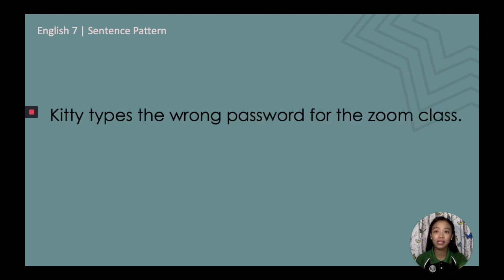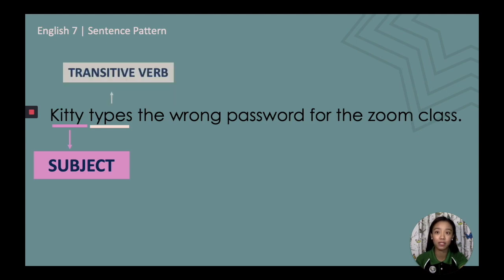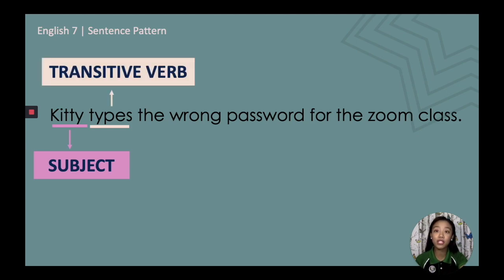Last sample sentence: 'Kitty types the wrong password for the Zoom class.' To identify the subject, identify who is the doer of the action — the subject is Kitty. The transitive verb is the action of Kitty: 'types.' For the direct object, ask: what is Kitty typing? The answer is 'the wrong password for the Zoom class.'